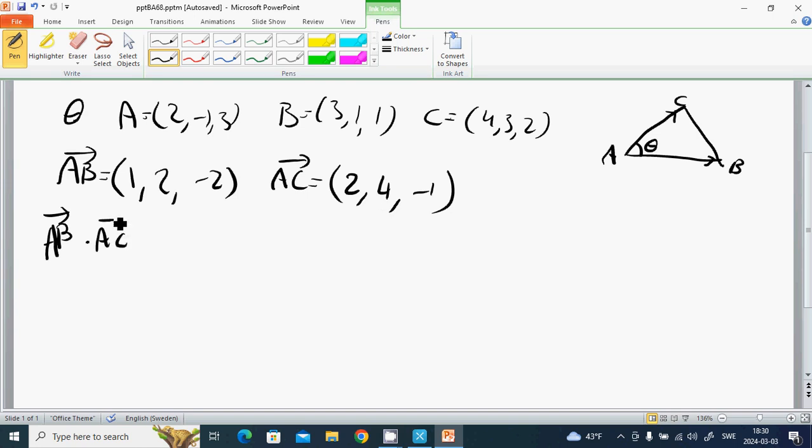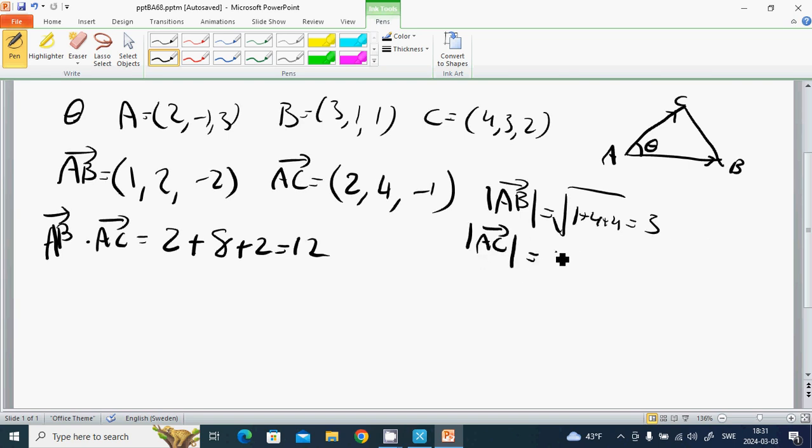Then AB·AC equals (1)(2) + (2)(4) + (-2)(-1) = 2 + 8 + 2 = 12. And |AB| equals √(1 + 4 + 4) = 3. And |AC| equals √(4 + 16 + 1) = √21.